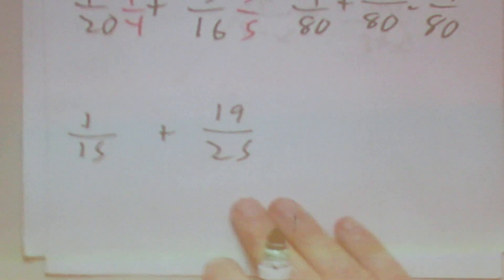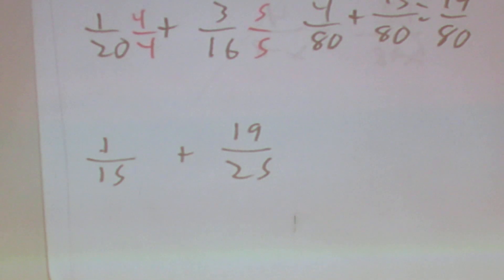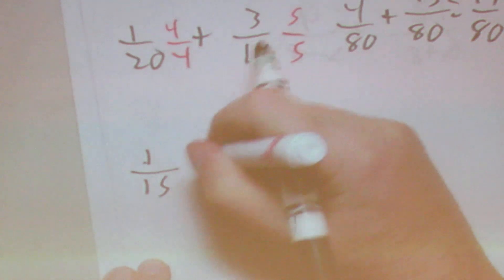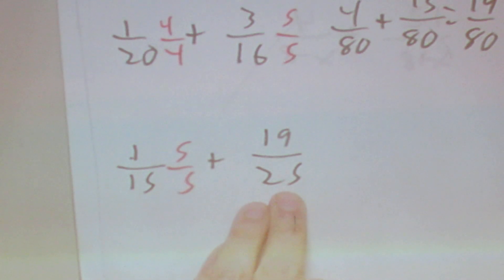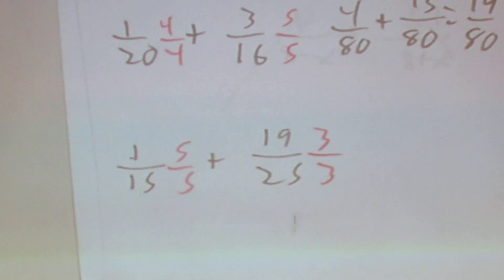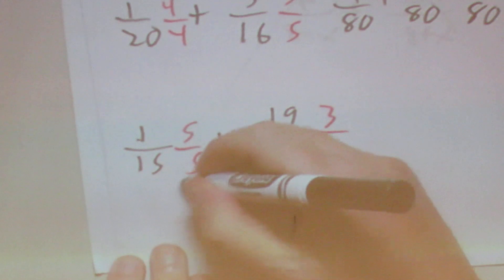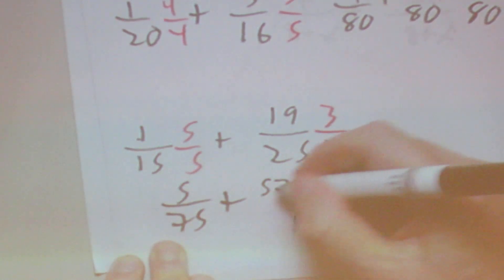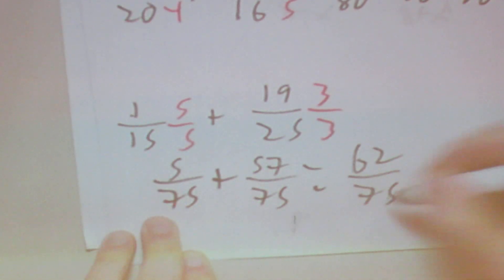Next, we have 1 over 15 plus 19 over 25. The least common denominator for these two numbers is 75. 15 goes into 75 five times, so we multiply by 5 over 5. 25 goes into 75 three times, so we multiply by 3 over 3. That gives us 5 over 75 plus 57 over 75. Adding those gives 62 over 75.